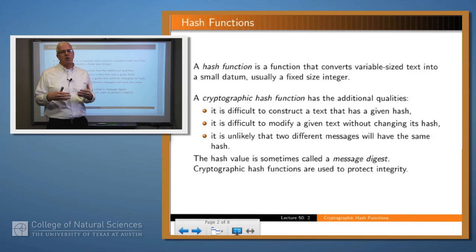So what's a cryptographic hash function? Well, it's a function like that, a hash function, that has some additional properties. In particular, it should be difficult to construct a text that has a particular hash value. It should be difficult to modify a text without changing its hash value. And it should be unlikely that two different messages have the same hash value, and we say hash to the same value. And we call that a collision if you have two different messages which do hash to the same value.